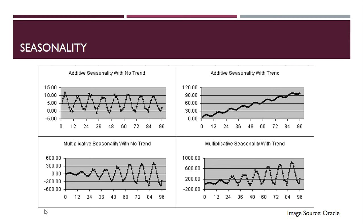Cyclic behavior completely differs from seasonality. Cyclic patterns can occur because of any external event — for example, commodity prices may crash due to underlying demand changes, or gold prices may shift during a recessionary scenario. These are cyclic in nature and you cannot predict exactly when they'll occur. So anything not fixed to a calendar period is cyclic, not seasonal — these are driven by business cycles or economic cycles.